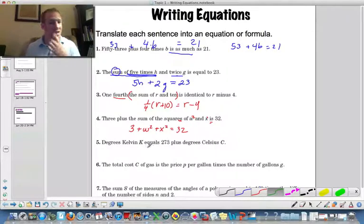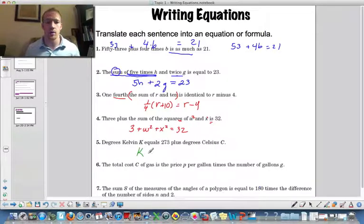Degrees kelvin k equals 273 plus degrees celsius. Okay.